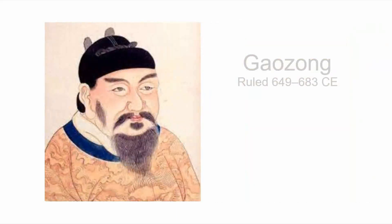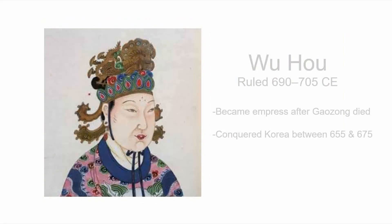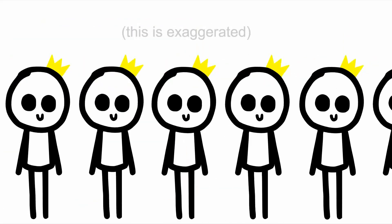After him was Gao Zong in 649, who married Wu Hao. Wu Hao became empress after Gao Zong died. She conquered Korea between 655 and 675. After Wu Hao died, there were many more emperors who didn't do their jobs well and ended the Tang Dynasty in 907.